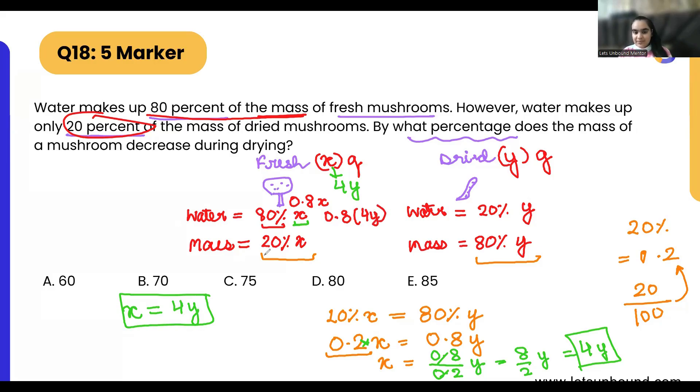And the same thing over here as well, 0.2 times 4y. And this can also be written as, 4 times 8 is 32, so 3.2y. And here it is going to be 4 times 2 is 8, so 0.8y.